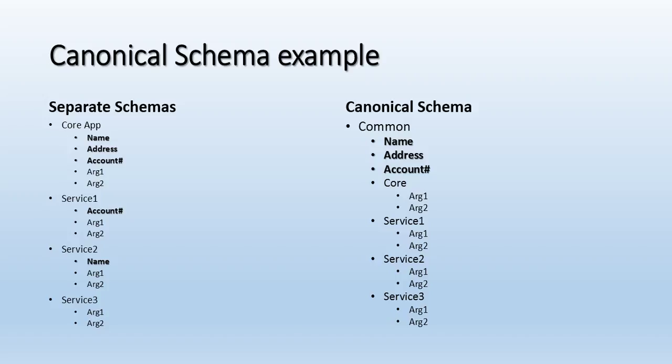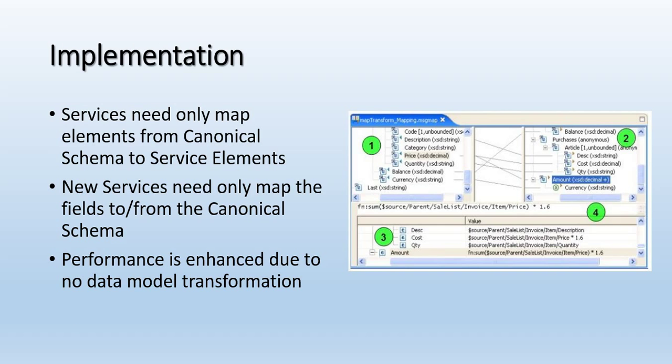In a Canonical Schema, you pull out the name, address, and account number that are common to all of the services. And then you have separate elements for each of the argument patterns — each of the elements for each of the other services. This allows one schema to have all of the elements for all of the services. The implementation allows you to then only need a map for each service to go from the Canonical Schema to the service elements.